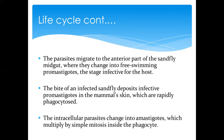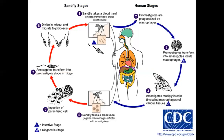Depending on which organ the amastigotes are in, another sandfly comes by, takes a blood meal, and takes in the amastigotes, and the cycle continues. So remember: amastigotes are what exist in the human or mammalian host, residing inside phagocytes. Once they multiply completely and burst open, they release amastigotes, which the sandfly takes in. In the sandfly's gut, they change morphology into promastigotes.